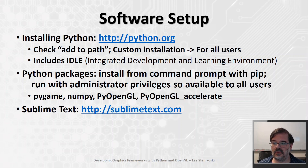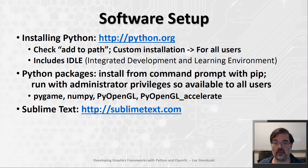We'll also need to use some Python packages. These are special libraries which provide added functionality on top of the core Python libraries. We'll see how to install them from the command prompt or from PowerShell using a program called pip. And then finally, we'll talk about a different development environment which is highly recommended, called Sublime Text.